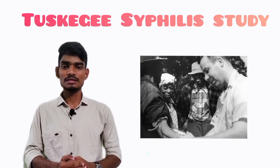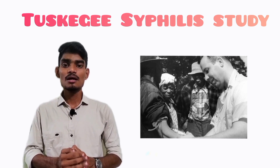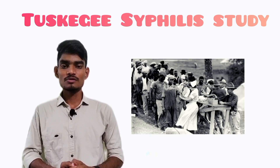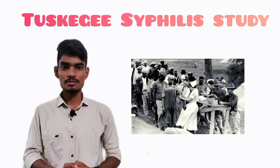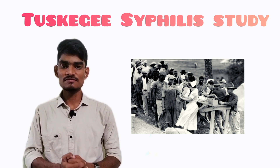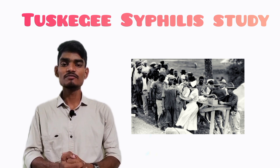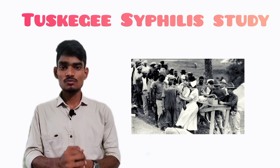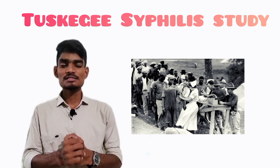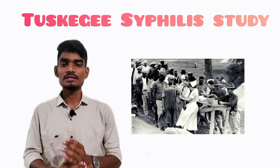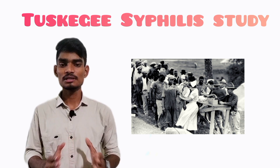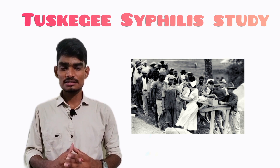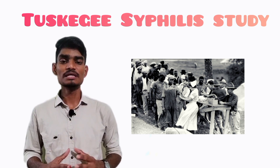A medical experiment was conducted by the US Public Health Service from 1932 to 1972. It involved 600 African American men who were suffering from syphilis. They were not informed about the medical experiment and did not receive proper treatment, even though penicillin could have cured them. This study raised severe ethical concerns and led to important changes in the ethics of clinical research and its regulations. It is considered a dark chapter in the history of medical research.